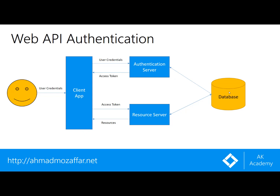If there is already a user with that username and password, it generates an access token that contains the user's information and claims such as email, phone number, first name, last name, etc., and sends that access token back to the user. The client should save this access token in a secure place to use it in future requests.